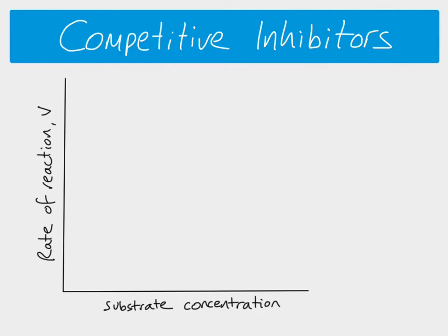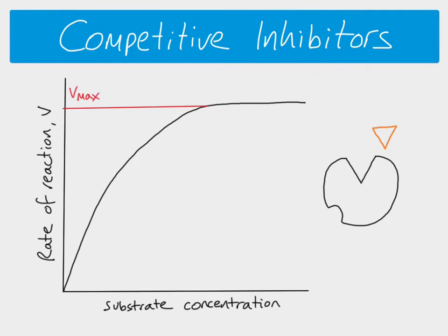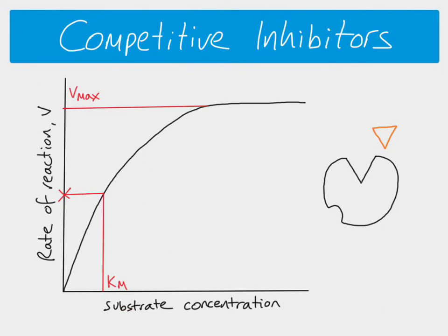If we look at competitive inhibitors, we're going to look at a substrate concentration against rate of reaction graph. With no inhibitors present, we see the expected graph shape: an increase in rate as substrate concentration increases until you reach Vmax. From Vmax, we can calculate Km by looking at half Vmax and working out the corresponding substrate concentration.